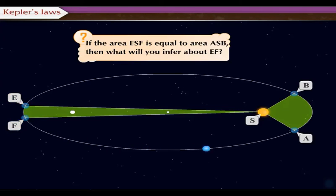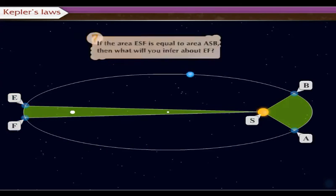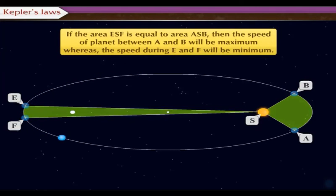If the area ESF is equal to area ASB, then the speed of planet between A and B will be maximum, whereas the speed during E and F will be minimum.